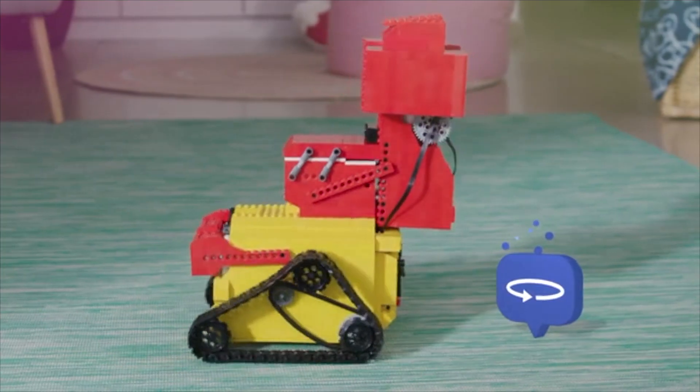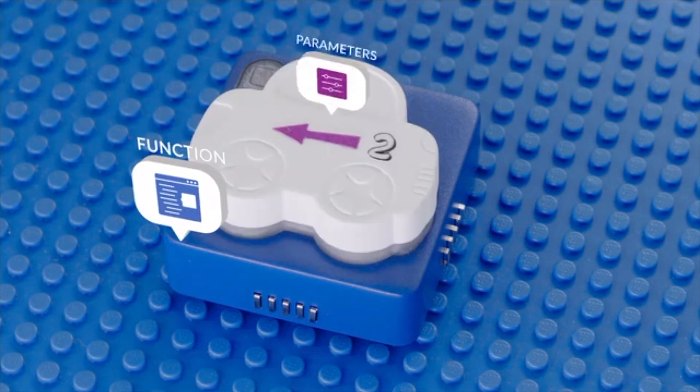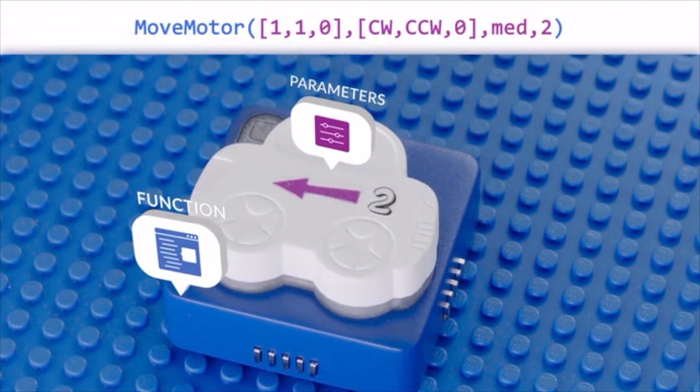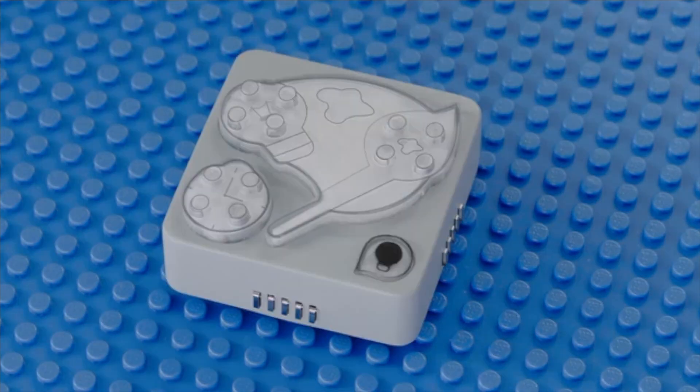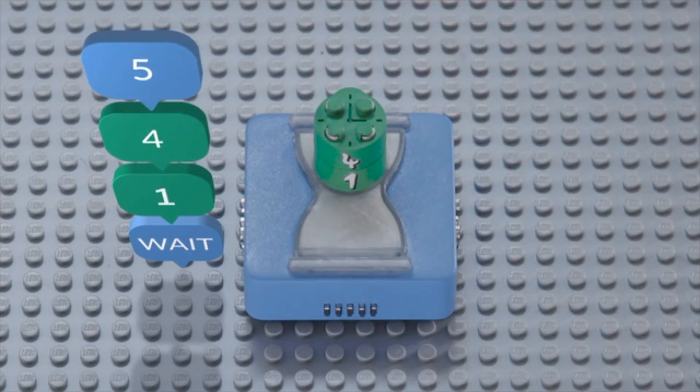To code a robot, your kid uses two types of bricks, functions and parameters, just like in code. There are function blocks for sound, movement, and lights. Stacking parameters on top of functions creates the different actions.